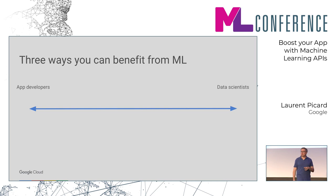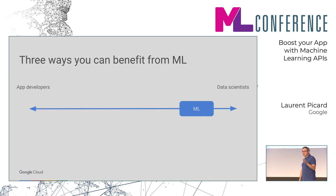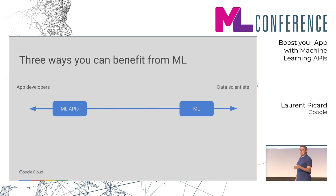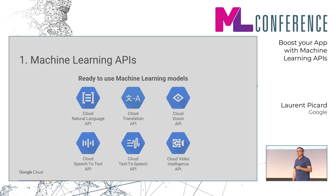If we take a step back and try to think where we are right now regarding machine learning, I think there are three ways you can benefit from it. If you're already a data scientist, you already know a lot. But if you're just a developer, you can use machine learning APIs — this is what we will see in detail. And there's a third way called AutoML that is filling the gap.